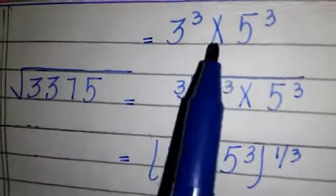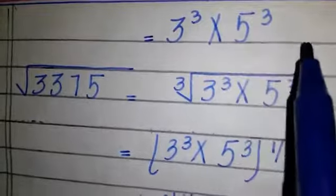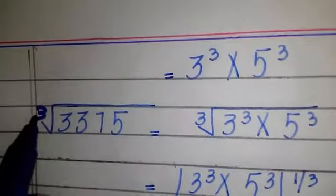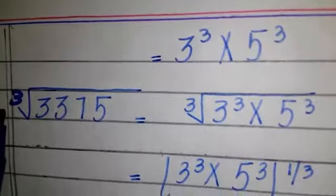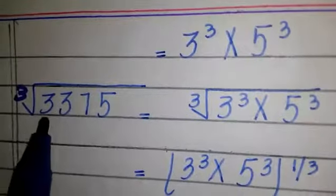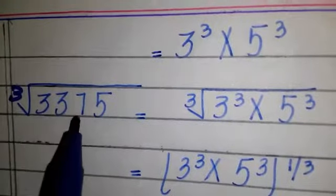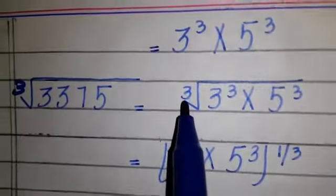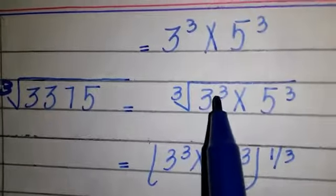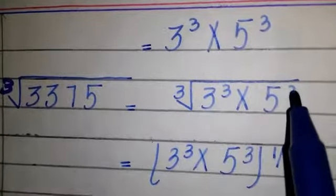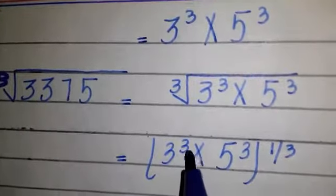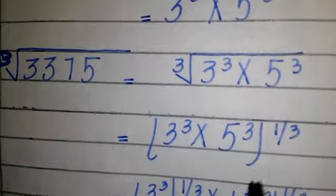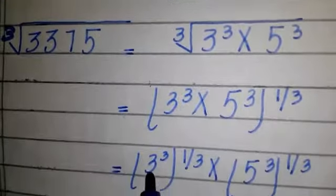This equals 3 to the power 3 into 5 to the power 3. Now we take its cube root. We write it as: the cube root of 33375 equals the cube root of 3 to the power 3 into 5 to the power 3, which equals 3 to the power 3 into 5 to the power 3, whole to the power 1 over 3.